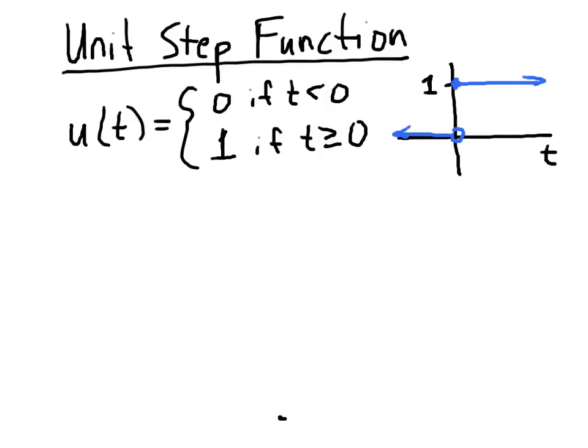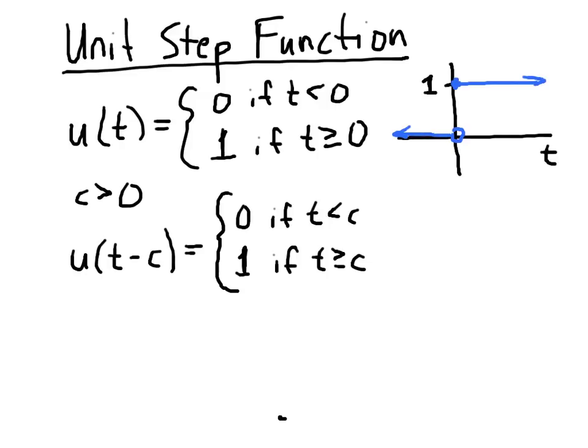Now, what we generally would like to do is choose some value c greater than or equal to 0 and define the following function: u of t minus c, which is simply a translation of u, c units to the right.